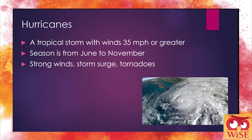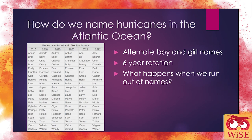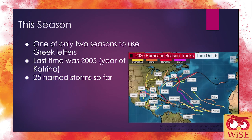Hurricanes are defined as a tropical storm with winds 35 miles per hour or greater. The season runs from June to November on average, bringing strong winds, storm surges — water being blown in by winds and rising rapidly — or even tornadoes. In the Atlantic Ocean, we alternate between boy and girl names with a six-year rotation. This season is only the second ever — after 2005 — to require the Greek alphabet for storm names. 2005 was the year of Katrina, a very infamous hurricane. So far this season we've had 25 named storms, just below the 26 from 2005, making it a record-breaking year, and the season still isn't over.